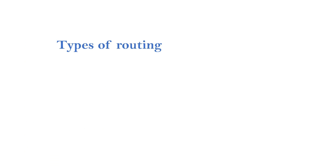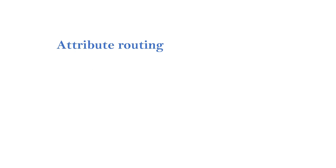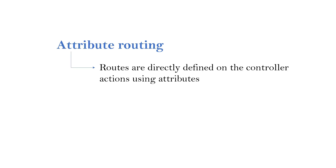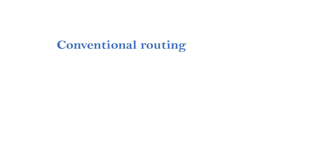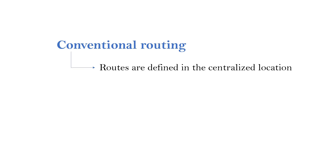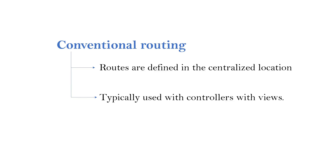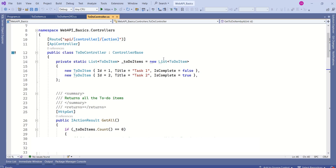ASP.NET Core supports two types of routing. One is attribute routing and the other is conventional routing. In attribute routing, routes are directly defined on the controller actions using attributes, and this type of routing is used with REST APIs. In conventional routing, routes are defined in a centralized location, and this is typically used with controllers with views. In this session, we are going to focus more on attribute routing since this is a Web API.